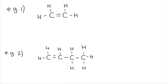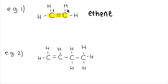In the first example, there are two carbons in the main chain. It doesn't matter which way we number them — either way, the double bond comes after carbon one. There's only one possible place for the double bond, so the molecule is simply called ethene. No position number is needed in the name.